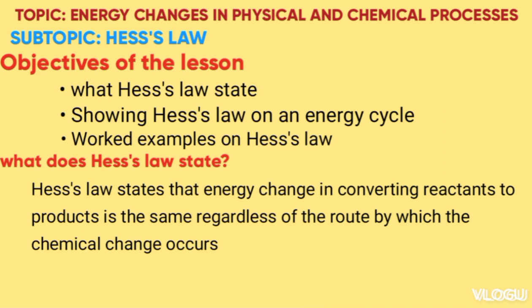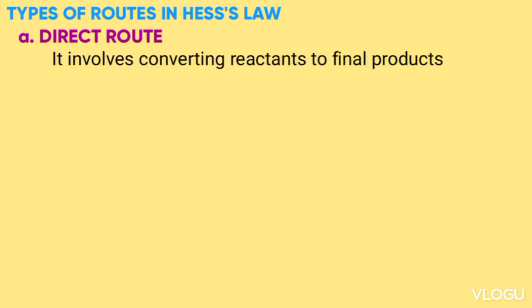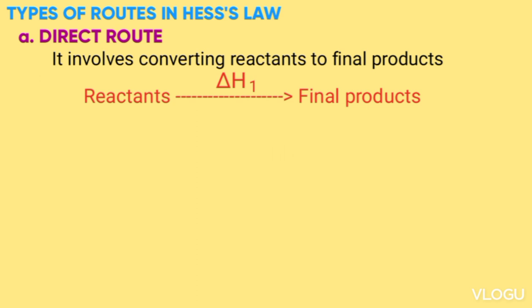From Hess's Law we are told about the route, and there are two types of routes. The first is called the direct route, which involves converting reactants directly to final products, shown as reactants → final product, with enthalpy change ΔH₁.